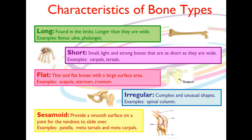So what makes each bone type correct? Long bones are found normally in the limbs and they are longer than they are wide. Examples include the femur, the ulna, and the phalanges. Short bones are small, light, and strong, and they are as short as they are wide — almost square. Examples here are the carpals, which are in the hand, and the tarsals, which are in the feet.